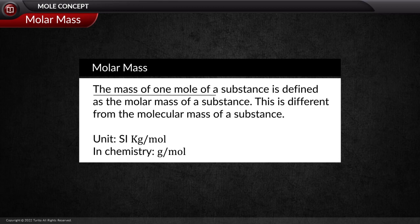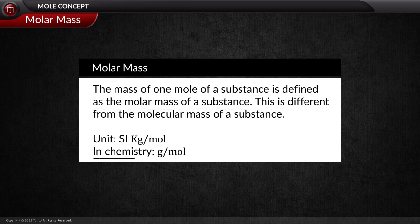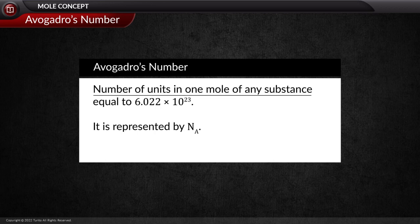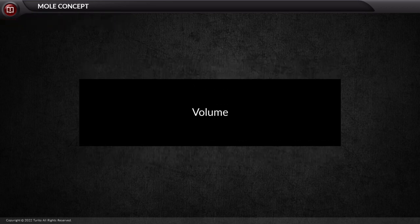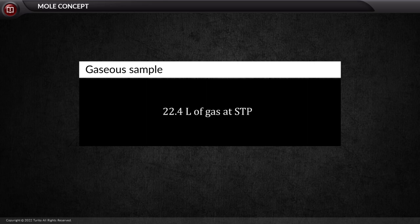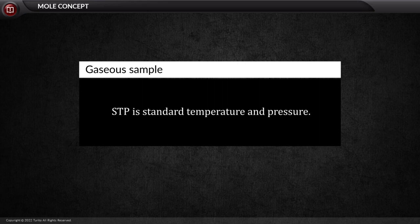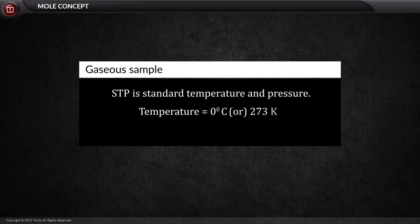Molar mass: the mass of one mole of a substance is defined as its molar mass. This is different from the molecular mass. The SI unit of molar mass is kilogram per mole, but in chemistry we use gram per mole. Avogadro's number: the number of units in one mole of any substance equals 6.022 × 10²³. These units may be any chemical entity — electrons, atoms, ions, or molecules — depending on the nature of the substance, and is represented by Nₐ. Volume: defined only for gaseous samples as 22.4 liters at STP, where the temperature is 0°C (273 K) and pressure is one atmospheric pressure.